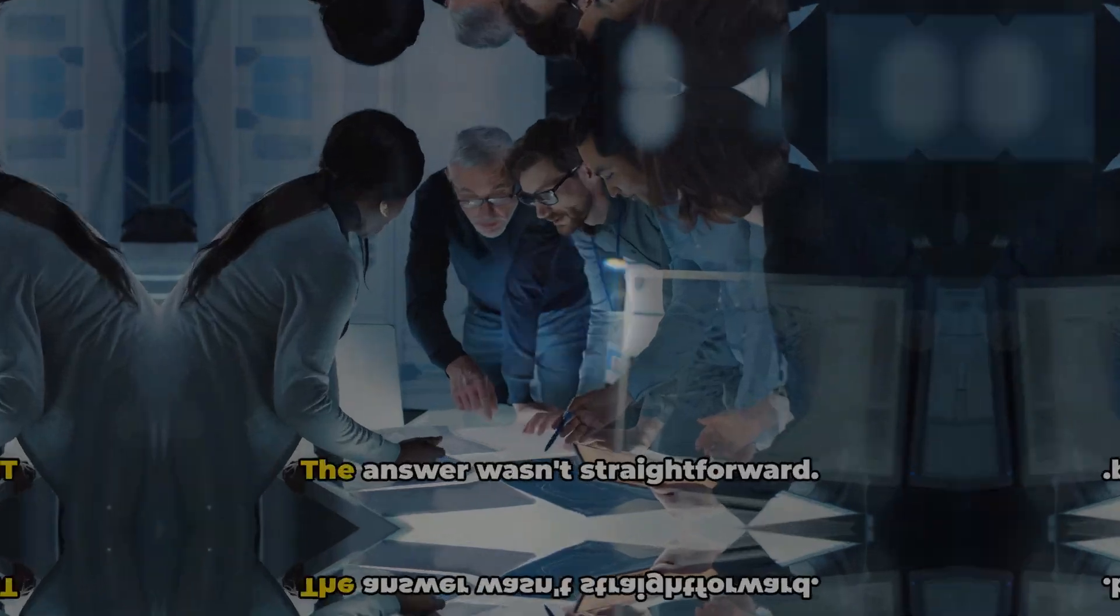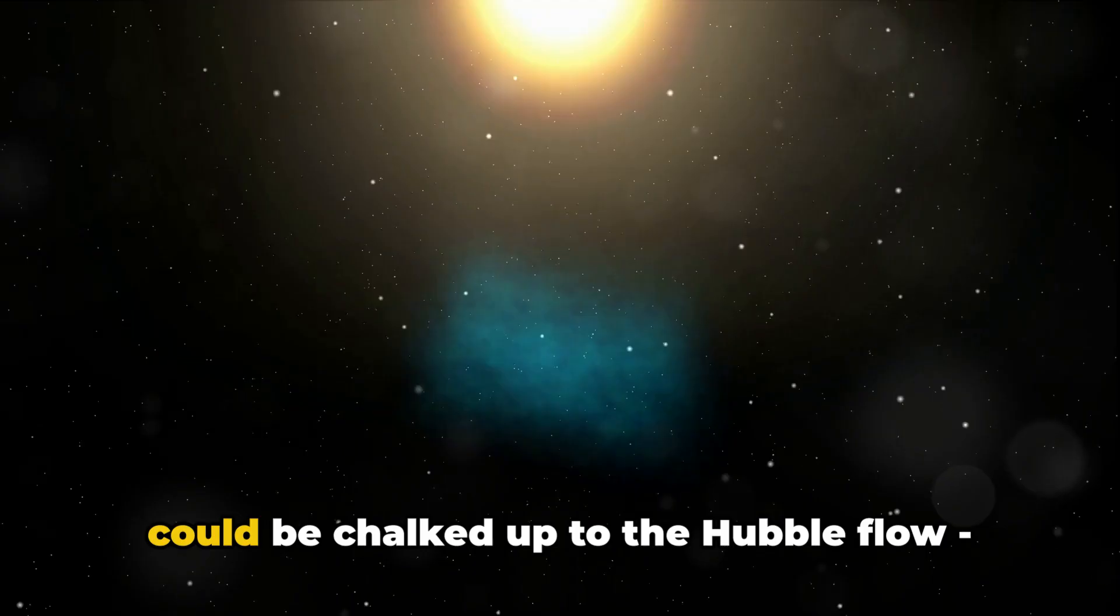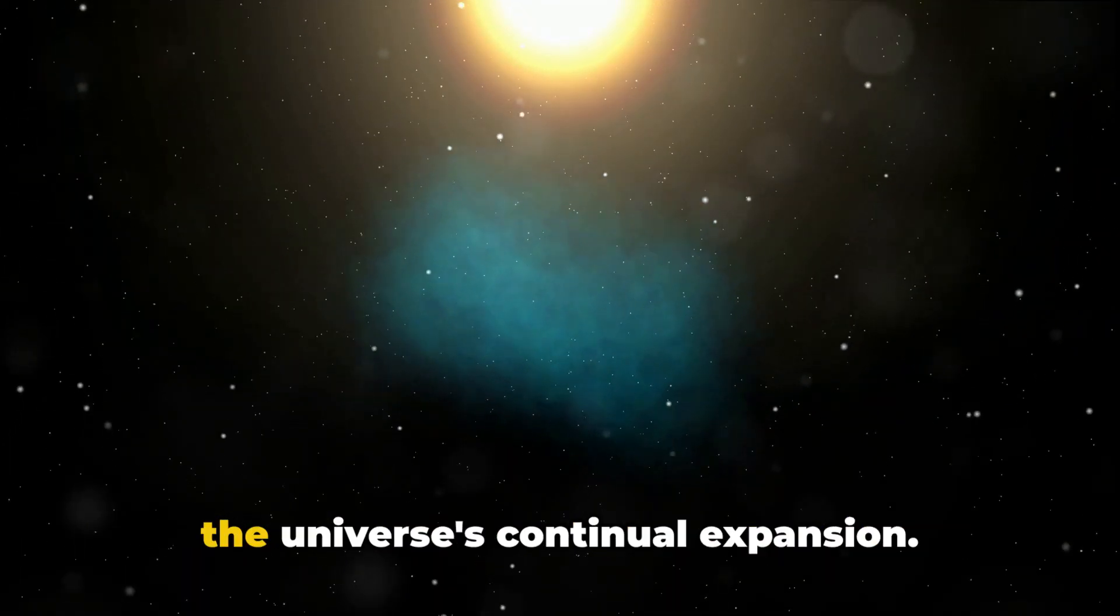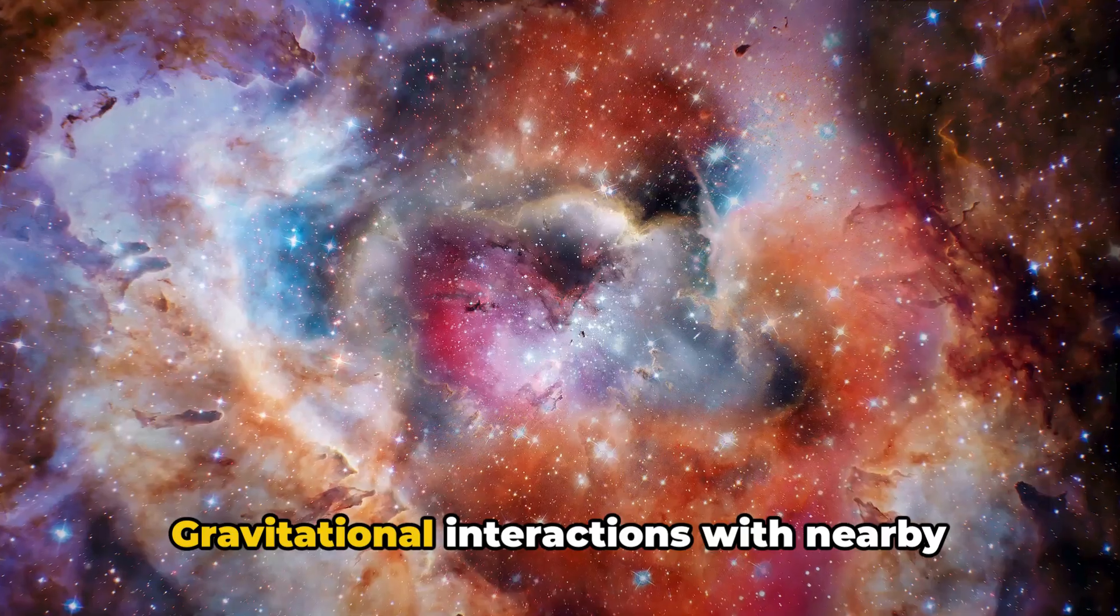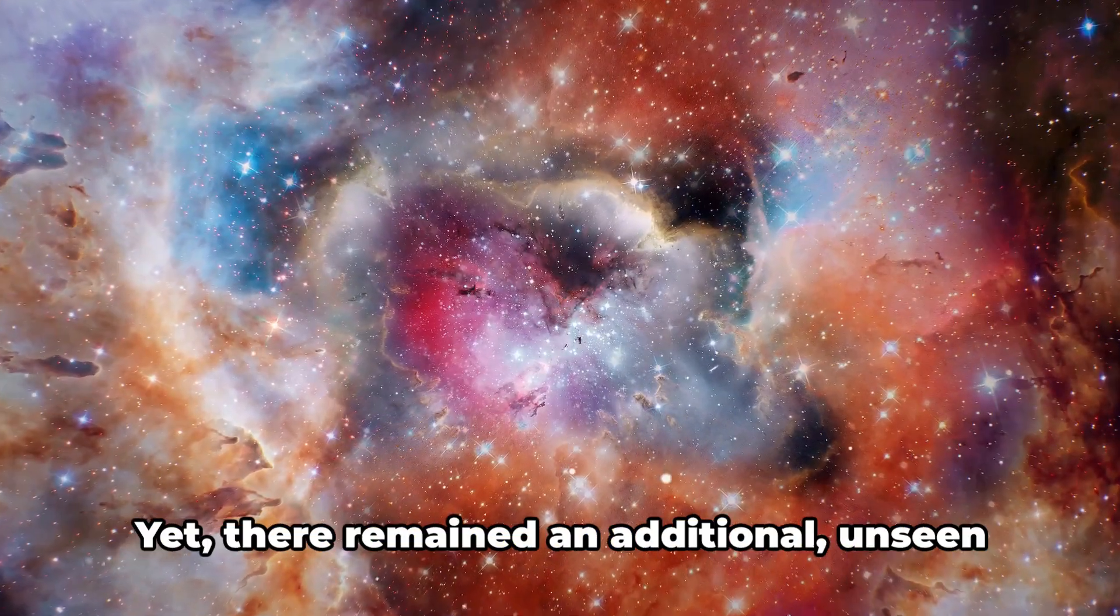The answer wasn't straightforward. Sure, part of the Milky Way's velocity could be chalked up to the Hubble flow—the universe's continual expansion. Gravitational interactions with nearby galaxies like Andromeda also played a part.